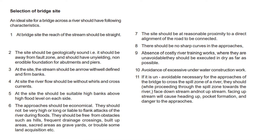So the ideal site for a bridge across a river — the river is the ideal bridge site. The first point is that the reach of the stream should be straight. We have to look at the geological soundness. There should be no faults, earthquakes, or landsliding. We have to construct the abutments and establish the pier.